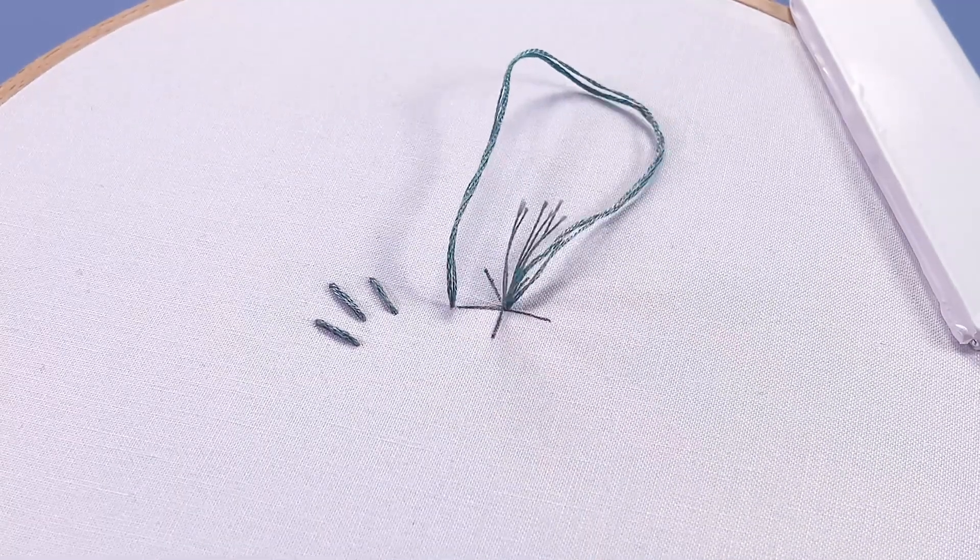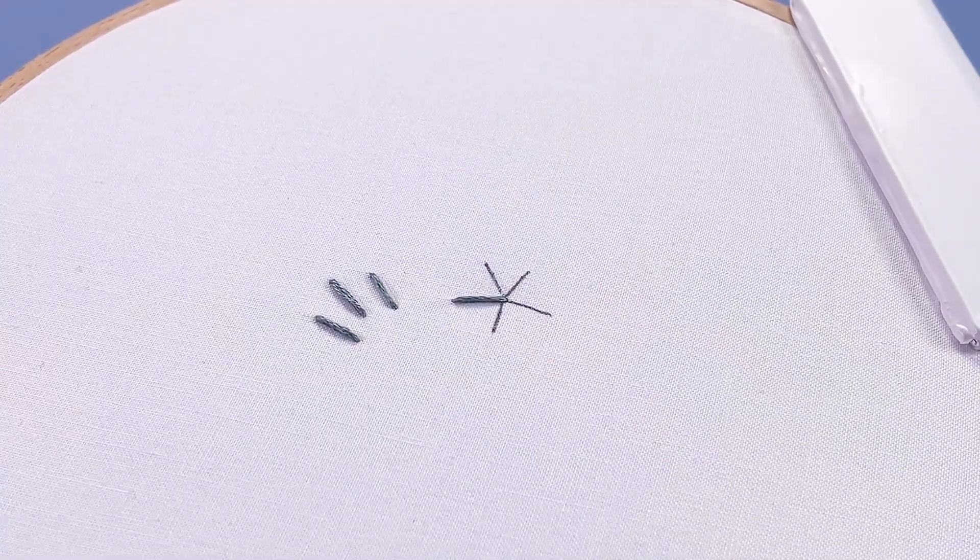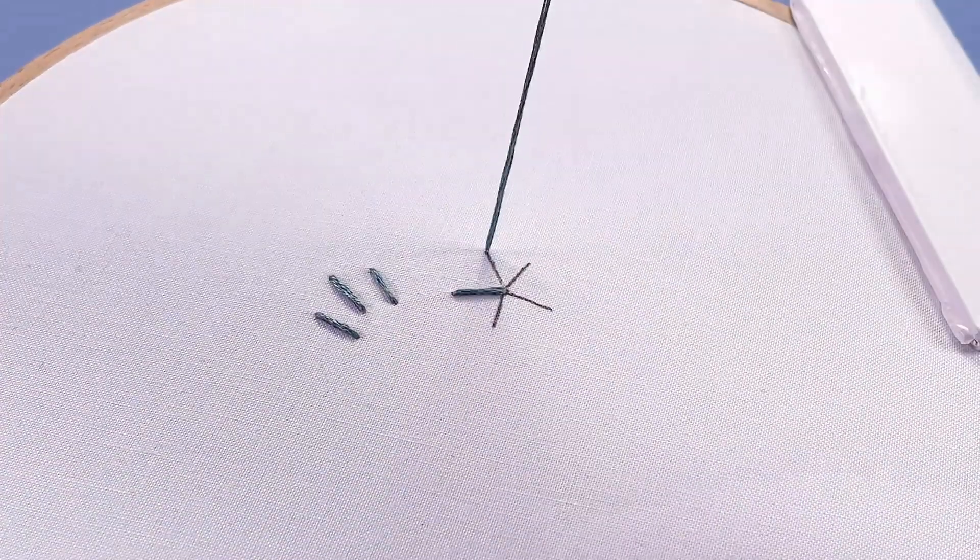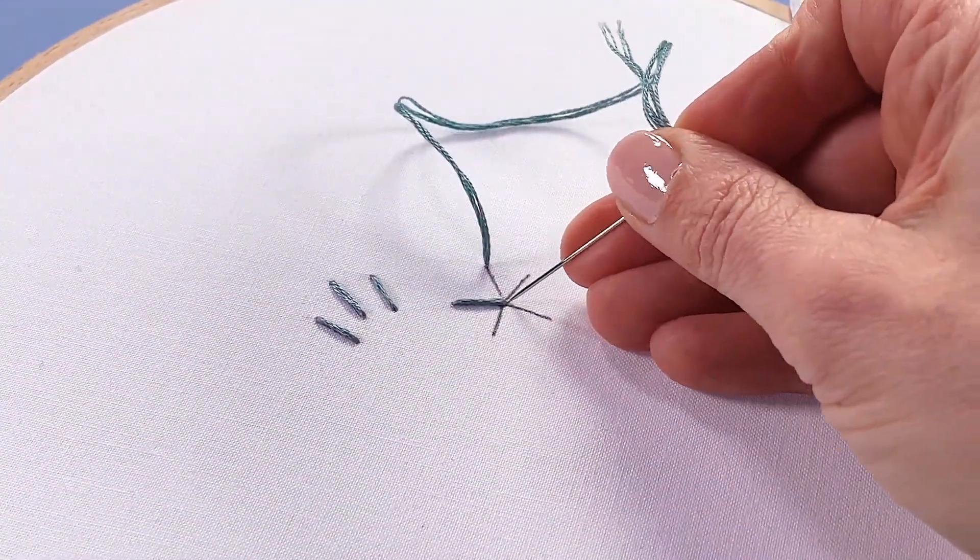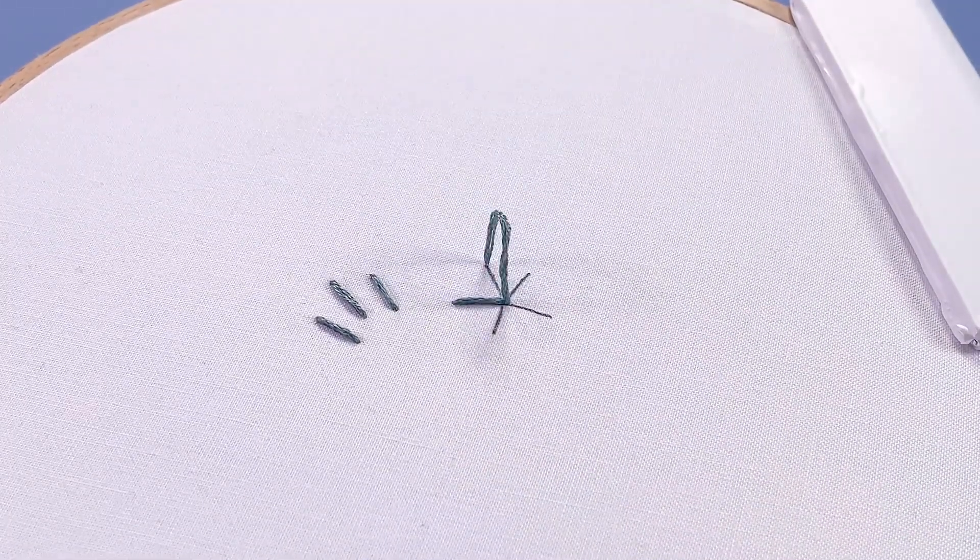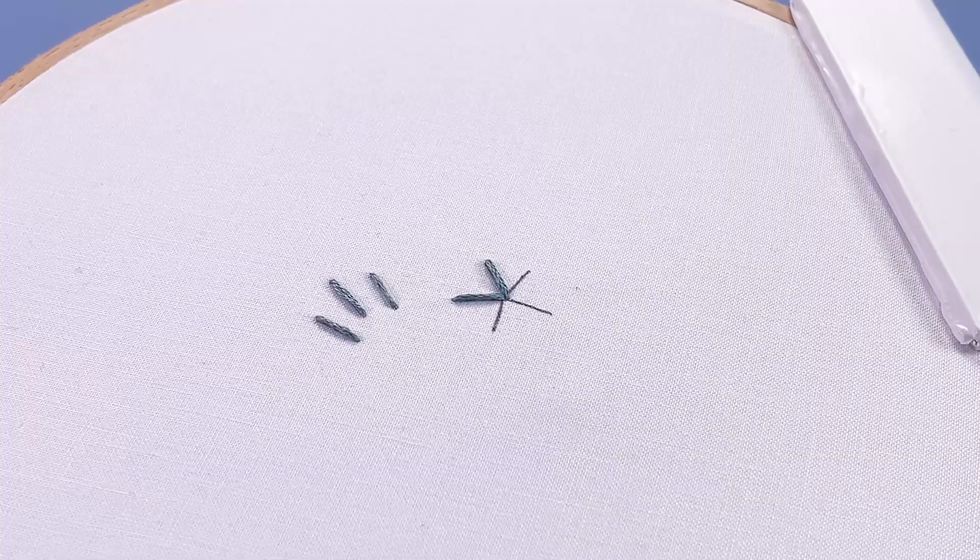So you're just going to go around gently drawing that slack through for each stitch. Here I'm actually going to poke my needle down into the same hole as last time. And because I'm not pulling super tight, that's totally cool.